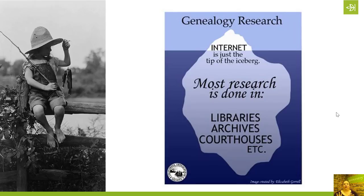Ancestry has billions of historical records available online. We add one to two million new records online every single day. In a world where people who have been doing family history for a long time remember scrolling through microfilm or having to take vacation time to come to Salt Lake City and go to the Family History Library, the availability of records is sometimes mind-boggling, and it feels like everything is just available at our fingertips. And in many ways that's true. Ancestry has done a wonderful job making records accessible, available, searchable, hintable.